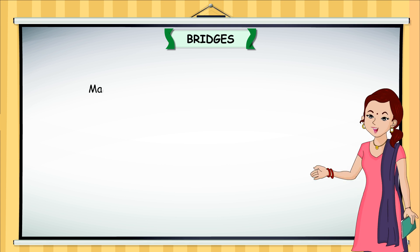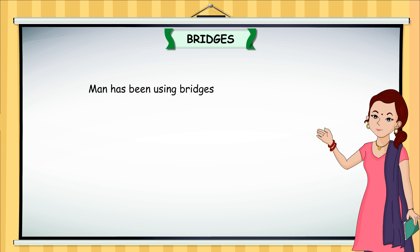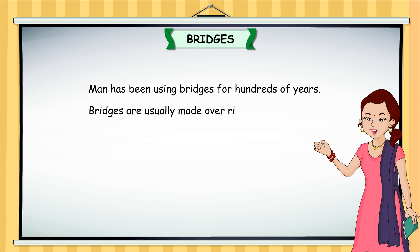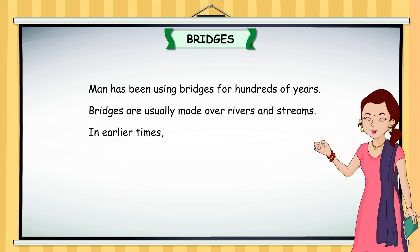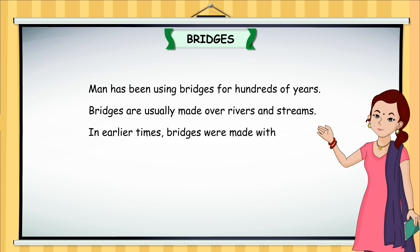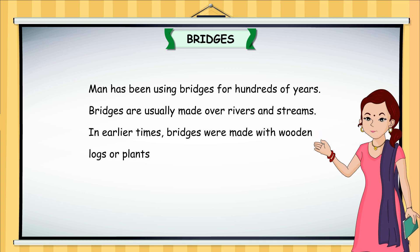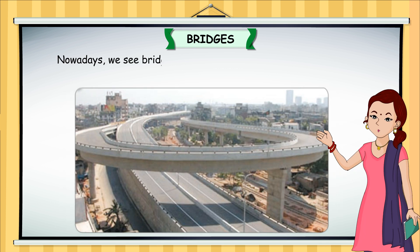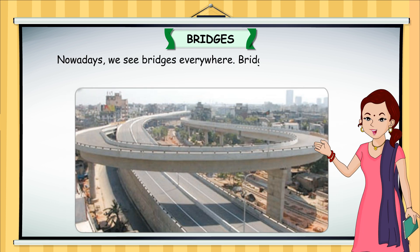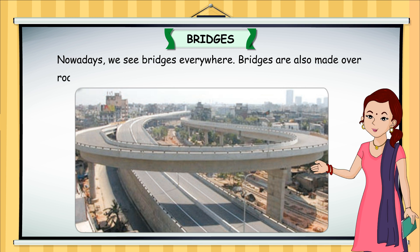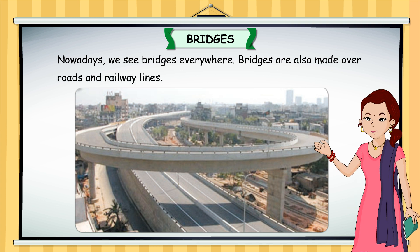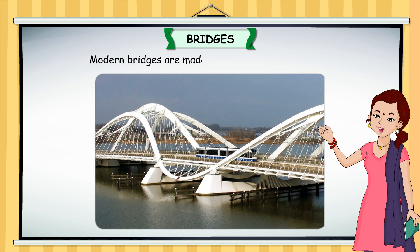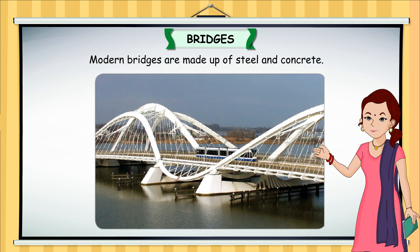Man has been using bridges for hundreds of years. Bridges are usually made over rivers and streams. In earlier times, bridges were made with wooden logs or planks and sometimes stones. Nowadays, we see bridges everywhere — bridges are also made over roads and railway lines. They help the traffic to move smoothly. Modern bridges are made up of steel and concrete.